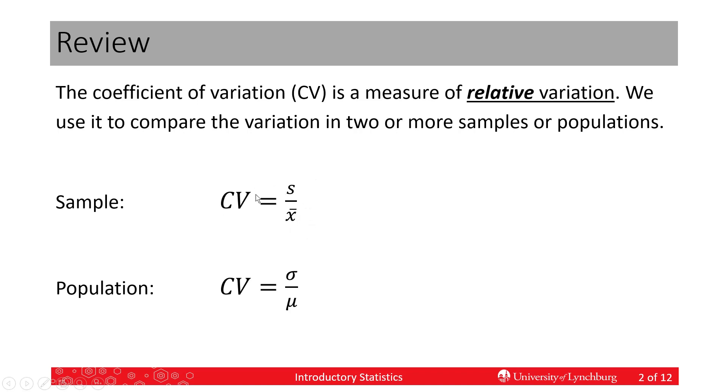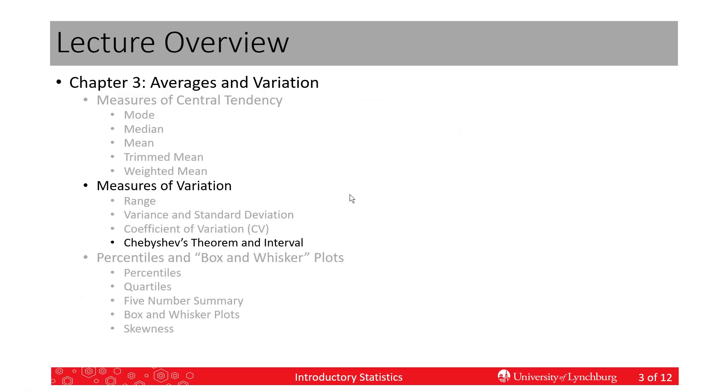So measures, relative measures, always are unit-free. They do not have any units. So this calculates the proportion of variation relative to the mean, and this is for population. So since they don't have any units, we can compare the numbers apples for apples, so to speak.